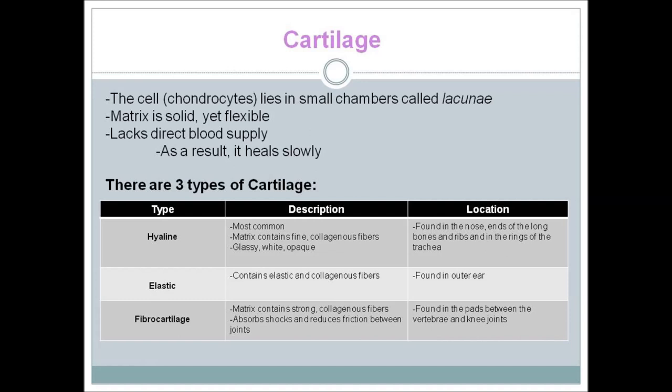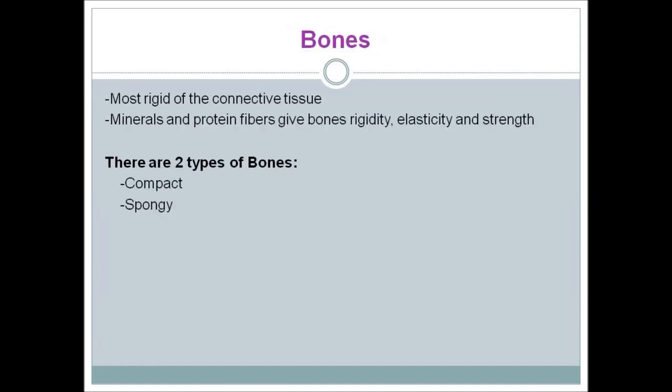Please pause the video to look over the chart for the description and location of each type of cartilage. Our last connective tissue is bone. Bones are the most rigid of the connective tissues and are made of minerals and protein fibers, which give bones rigidity, elasticity, and strength. There are two types of bones: compact and spongy.